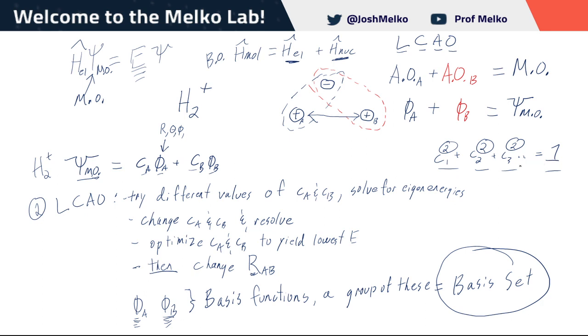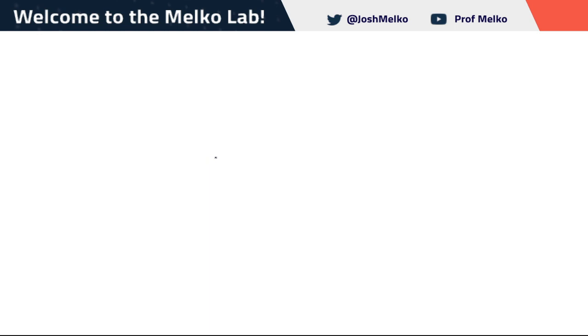That's what we're doing here with linear combination of atomic orbitals, applied to the Born-Oppenheimer approximation with separated nuclear and electronic terms. Now let's look at this more quantitatively and pictorially for H2+.